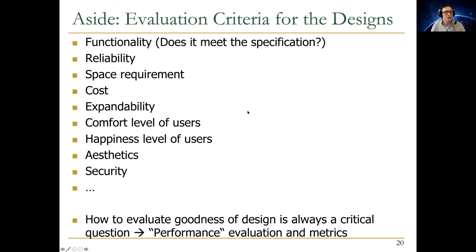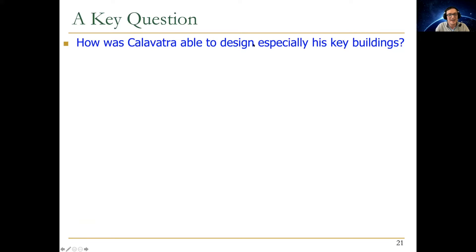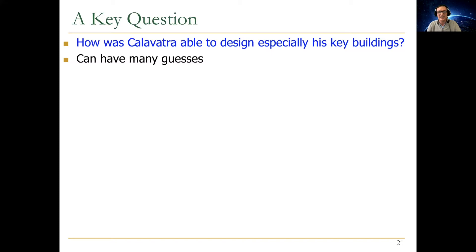We're going to talk about metrics later in this course and about trade-offs whenever we introduce an idea. We may not cover every single trade-off, and whenever you employ an idea in a particular setting, trade-offs may change depending on how the idea is used. A key question related to this course: how was Calatrava able to design his key buildings like the Oculus? Now we're getting into the mindset of the architect - a computer architect is similar to a building architect because both make a lot of trade-offs.